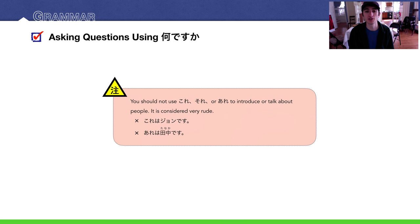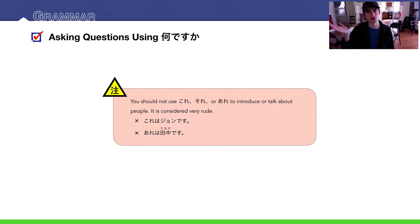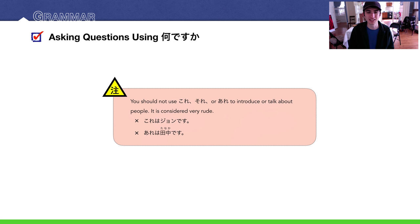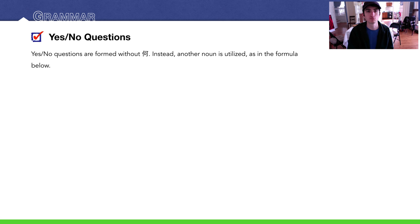Just a warning: do not use これ、それ、or あれ to introduce or talk about other people — it's rude. You cannot say これはジョンです or あれは田中です, because you're literally calling them a thing. We're going to look at other ways to introduce people later on.